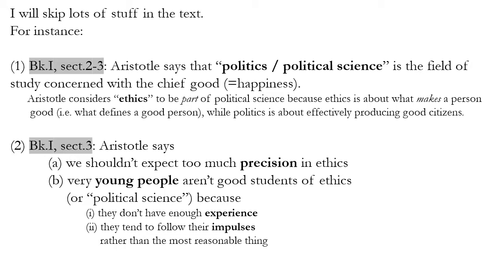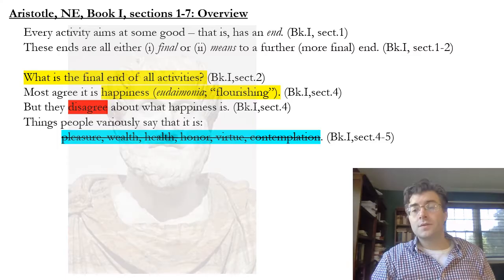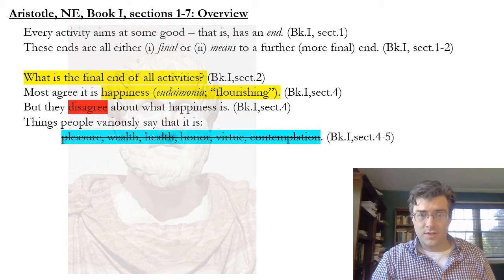There are two examples I won't talk through, but feel free to pause the video and read those points if you like — you may have noticed them while reading Book One. So this is roughly where we stopped in the last video: Aristotle answers the question of what the final end is by saying it is happiness.